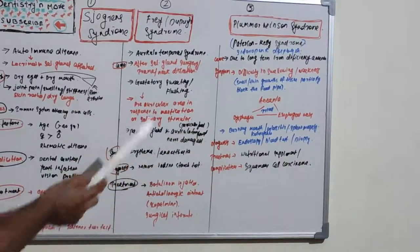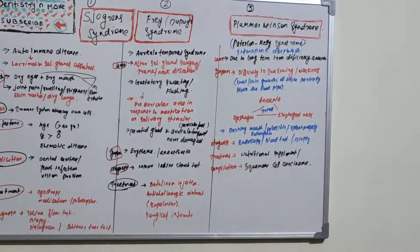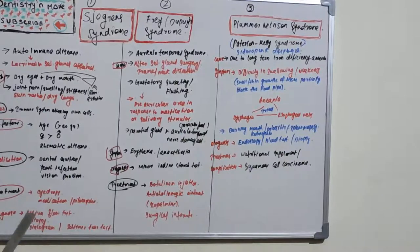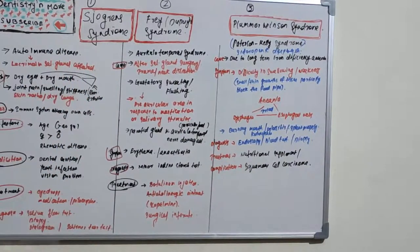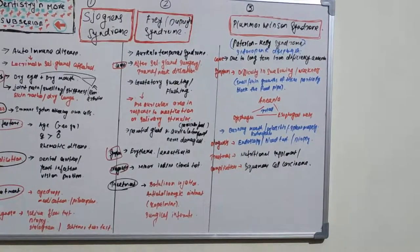How do we diagnose? We can use Minor's iodine-starch test, applying starch and iodine to get this test done for Frey syndrome. Treatment: we can use botulinum injection, anti-cholinergic ointments like scopolamine, and also surgical interventions.